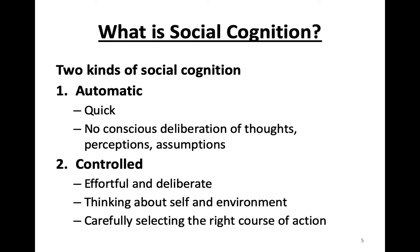We can think about social cognition as being of two types. We have an automatic as well as a controlled way of thinking, and this refers to the way that we think in general but also to social cognition. By automatic, we think about quick decision-making without any conscious deliberation of our thoughts, our perceptions, or our assumptions — often referred to as type one thinking. The second way is to think in a more controlled way, characterized as effortful and deliberate, thinking carefully about ourselves and the environments we're in, and carefully selecting the right course of action.